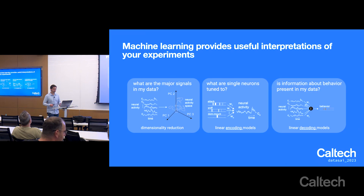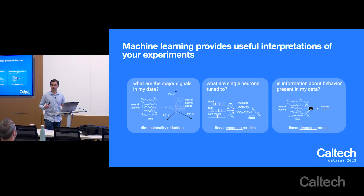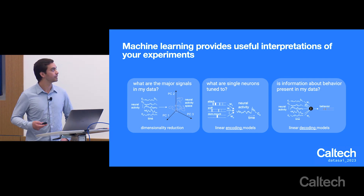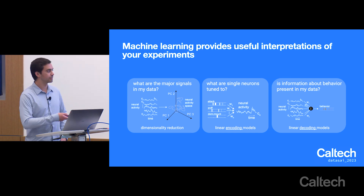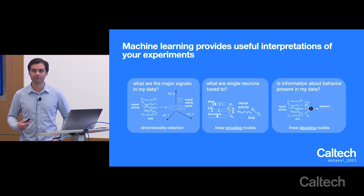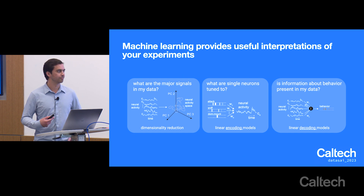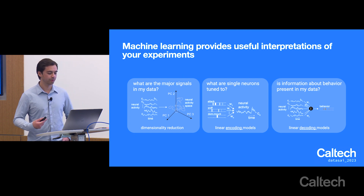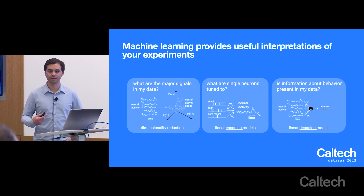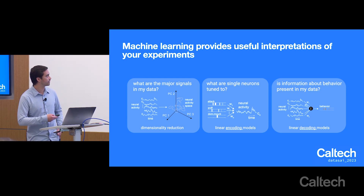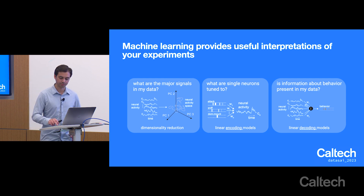Just to review everything we've been going through in this course so far: why is machine learning useful in science? Machine learning is useful because it provides many interpretations of our experimental data that we may not be able to find visually or through other methods of visual inspection, such as dimensionality reduction, linear encoding, and decoding models.